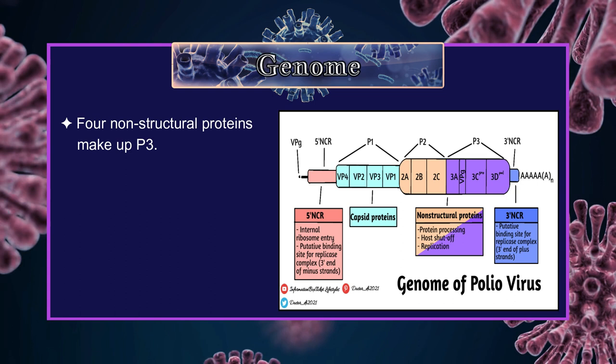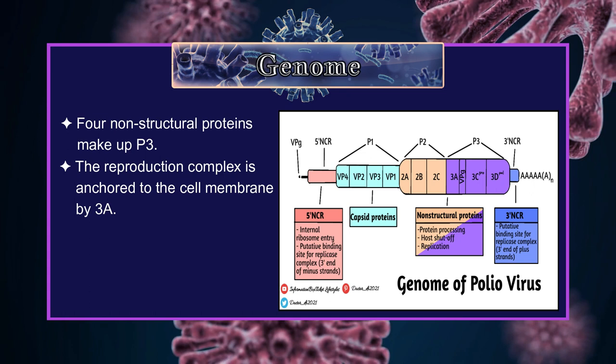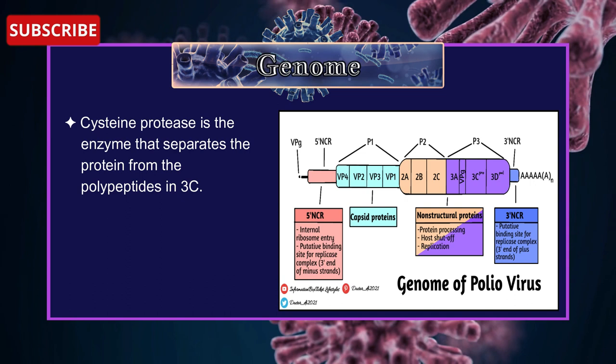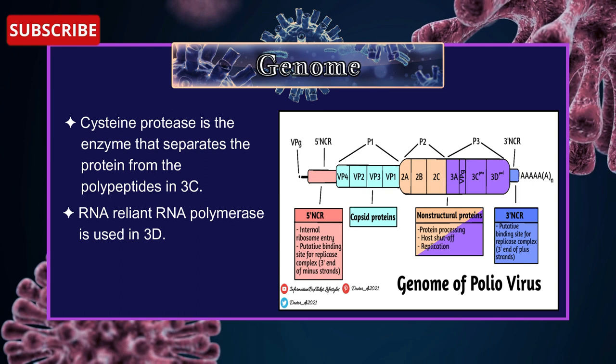Four non-structural proteins make up P3. The reproduction complex is anchored to the cell membrane by 3A. 3B is the VPg protein. Cysteine protease is the enzyme that separates the protein from the polypeptides in 3C. RNA-dependent RNA polymerase is used in 3D.